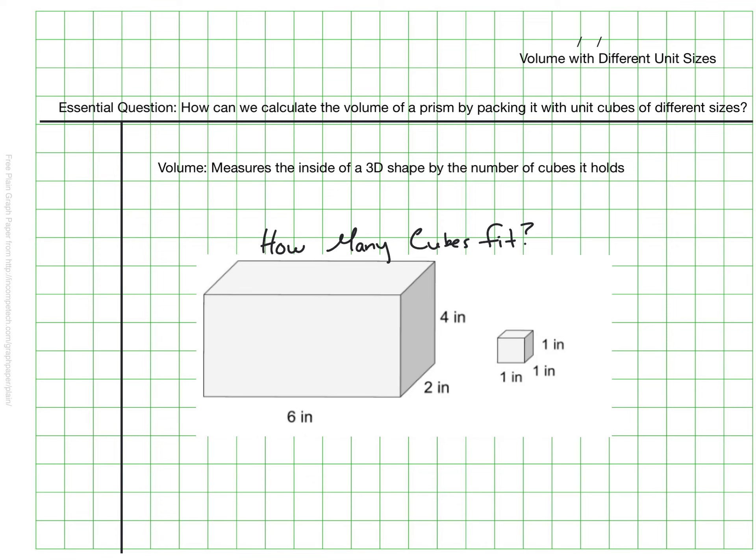So for example, we might have a prism that's 6 inches by 2 inches by 4 inches and we're trying to figure out how many of these inch cubes fit inside. And we have strategies that we can use to do that. We can find the area of the base and multiply it by the height, but for right now I'm just going to show the visual of the cubes. I'm going to start with my front dimension here, 6 inches. I know that each one of these 1-inch cubes would fit across and there would be 6 that could fit across 6 inches.